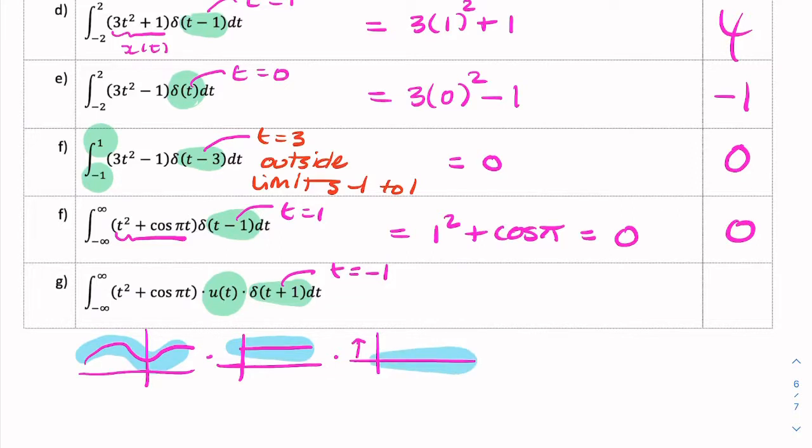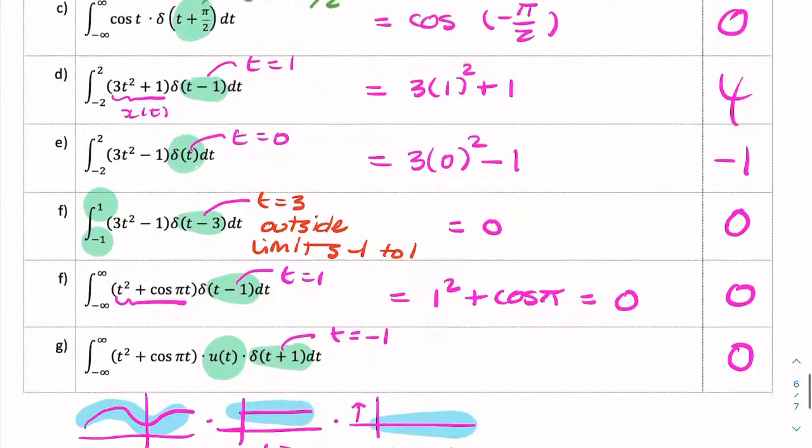Nowhere. Because the unit step is only non-zero for t greater than 0, and the unit impulse is only non-zero for t equals minus 1. So when you multiply the three, you actually end up with no overlap. So the total integration there is 0.